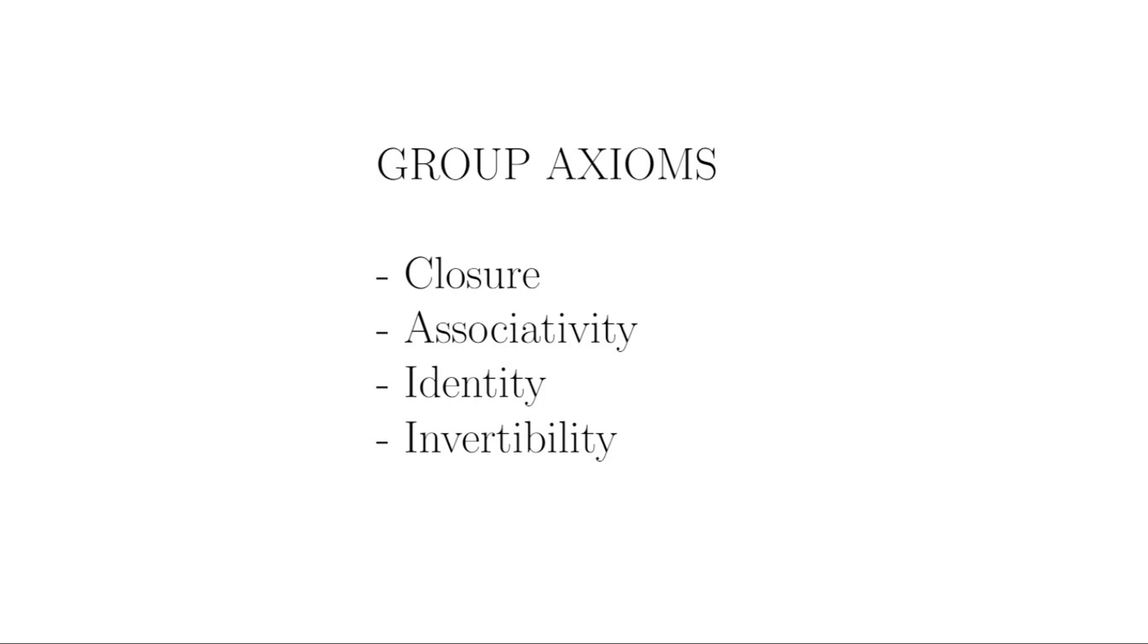We call these properties the group axioms and there are four: closure, associativity, identity, and invertibility. Now let's take a close look at each one.